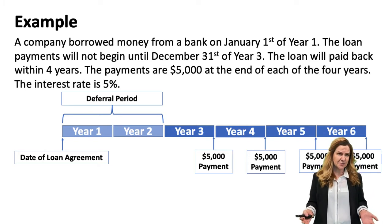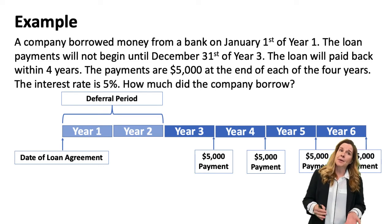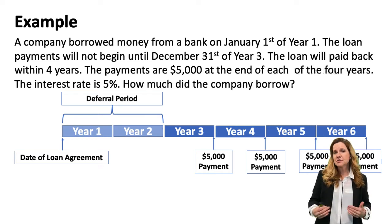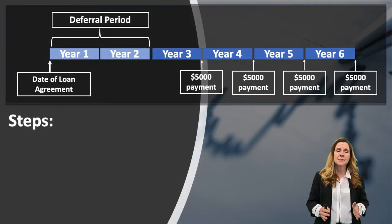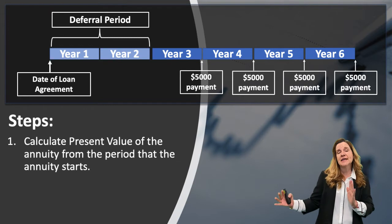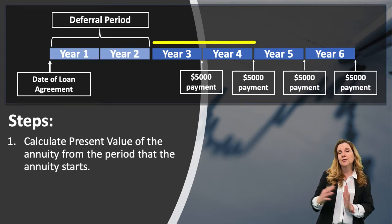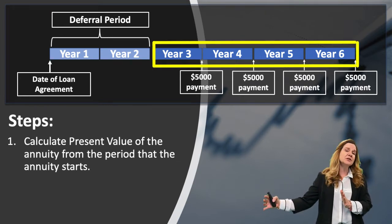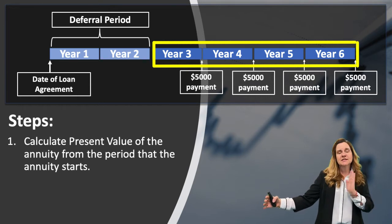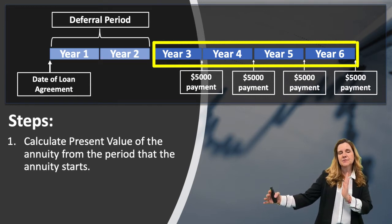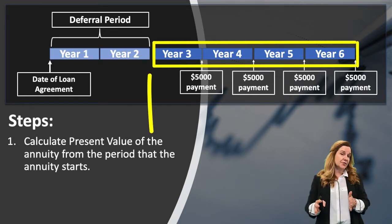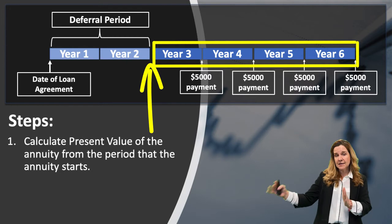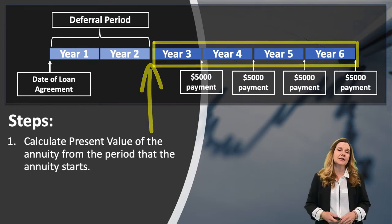The interest rate is 5%. How much did the company borrow? This is a two-step process when we're looking at deferred annuities. The first step is to figure out the present value of the actual annuity. We had four periods on that example, and we're going to look at the present value as of the beginning of the period as to when the annuity will start — when the cash flow will start. So it was on period three that we're looking at, and that's when we'll start the annuity calculation.